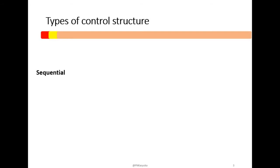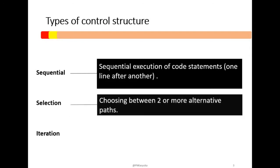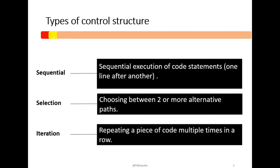The three types of control structures are sequential, selection, and iteration. Sequential is execution of code statement one line after the other. Selection is basically choosing between two or more alternative paths. And lastly, iteration is repeating a piece of code — or multiple statements — multiple times in a row.